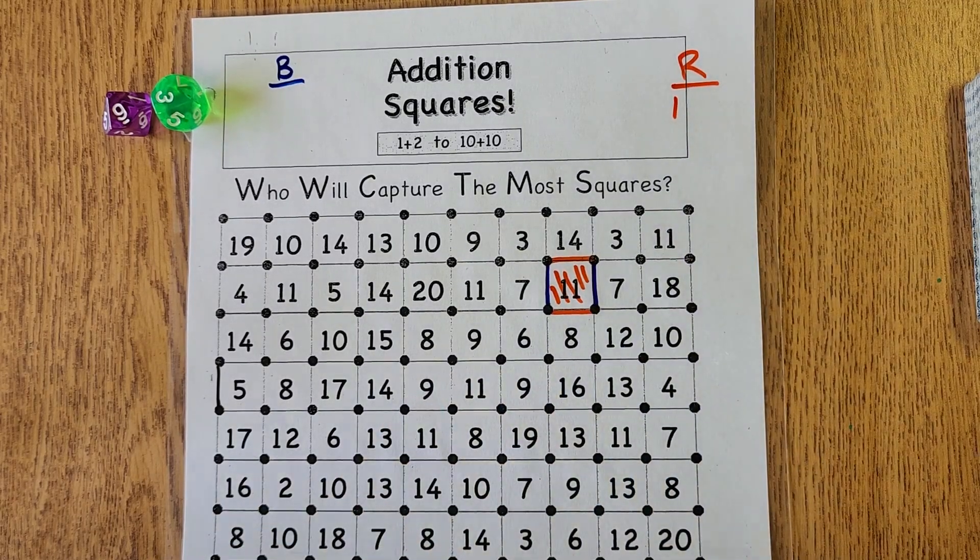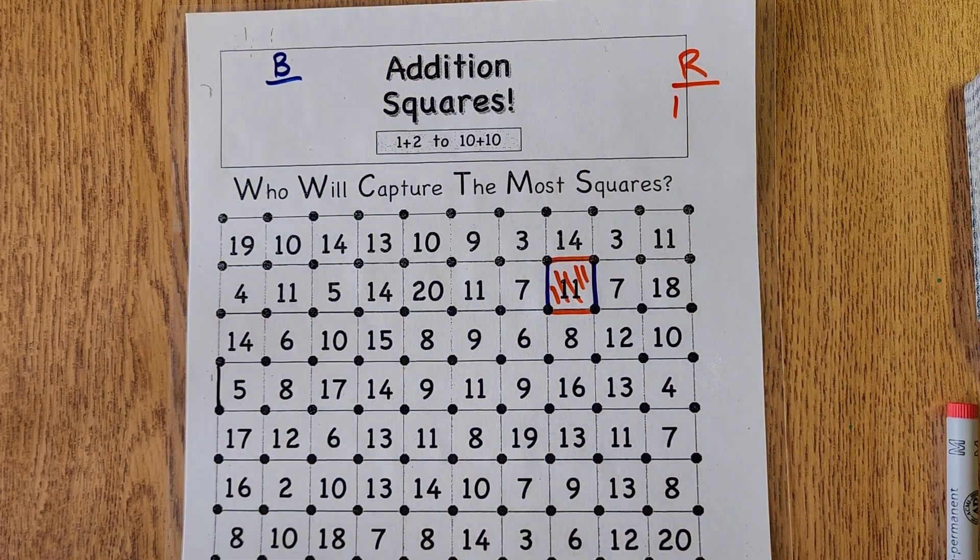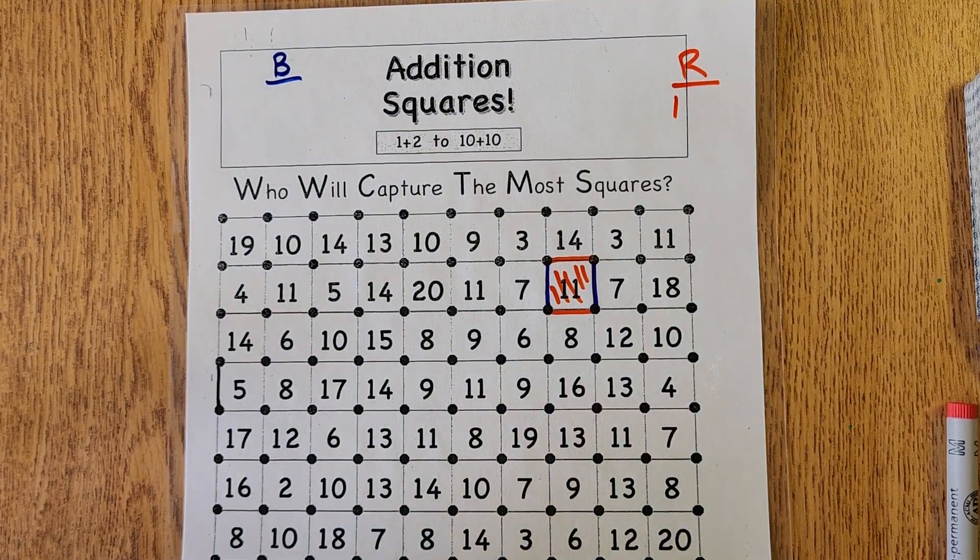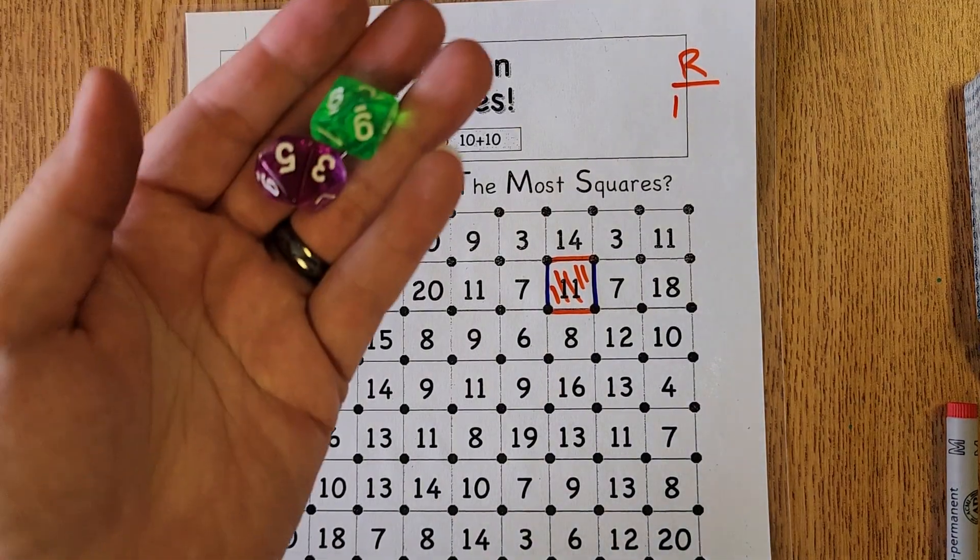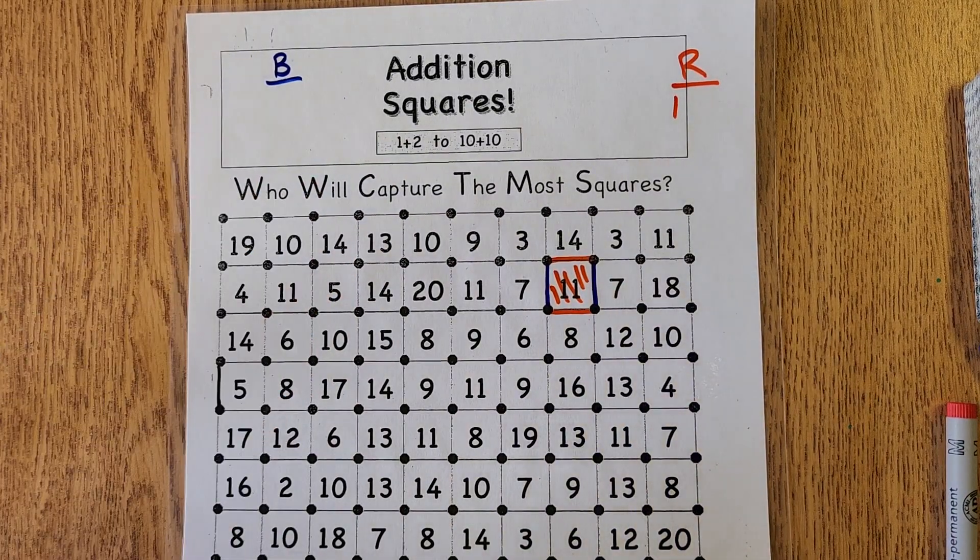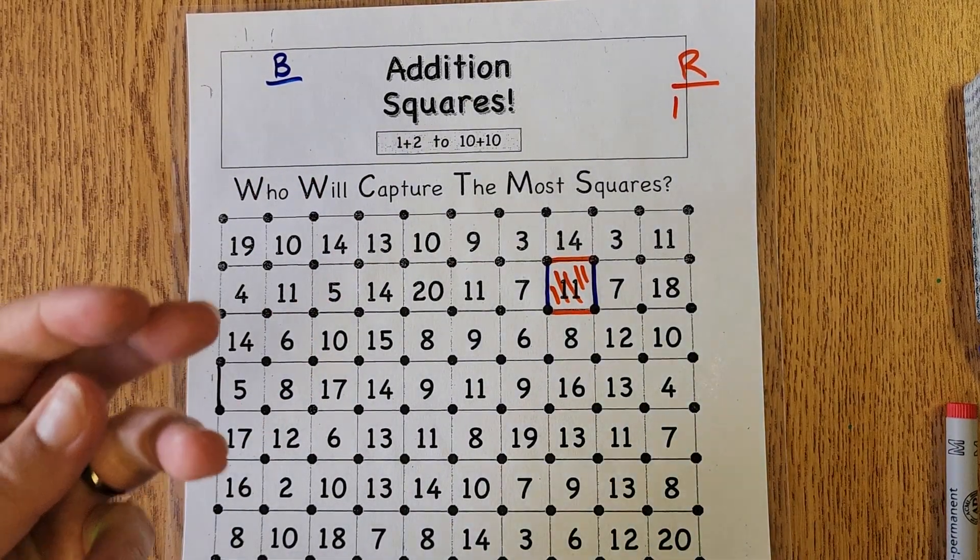The point of this game is to continue collecting points and practicing those facts up to 20 in order to build our fluency so that we don't have to count on our fingers or use a number line.